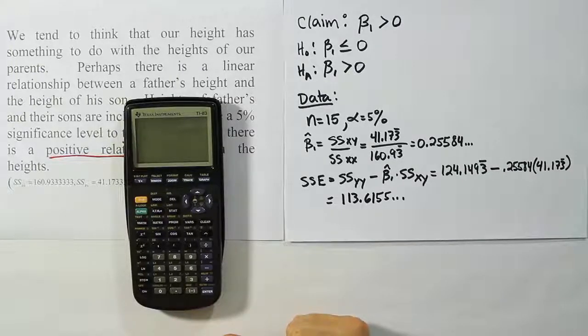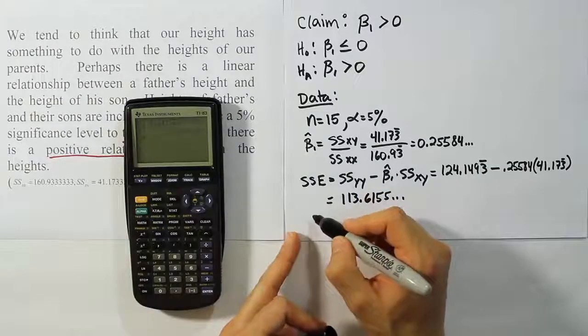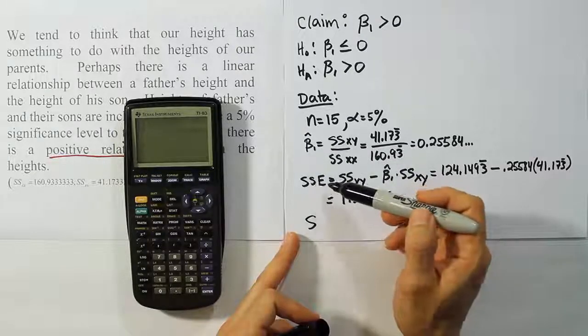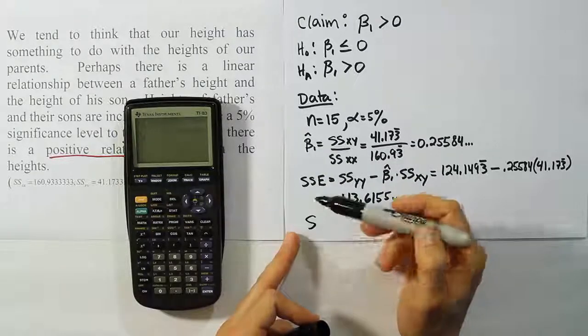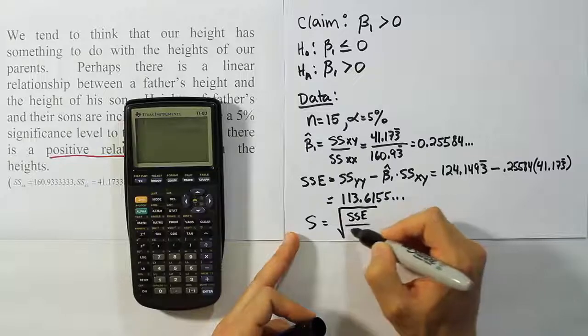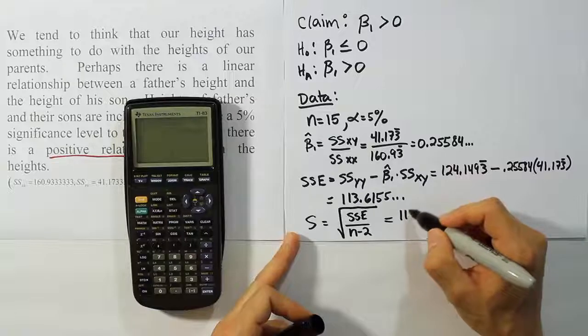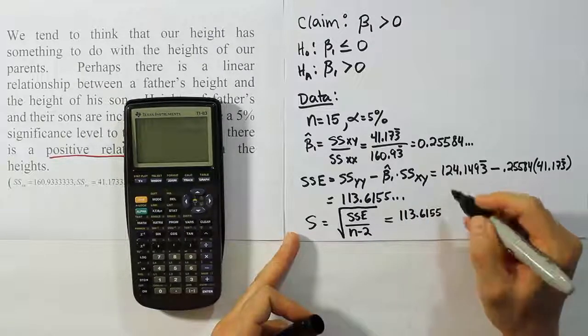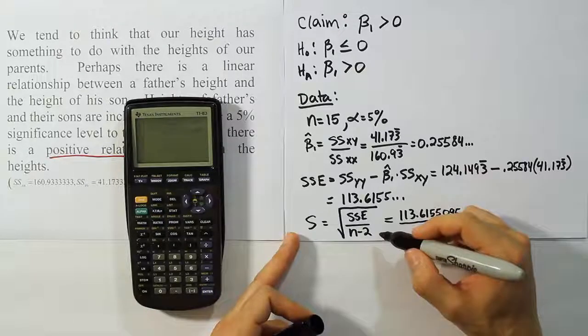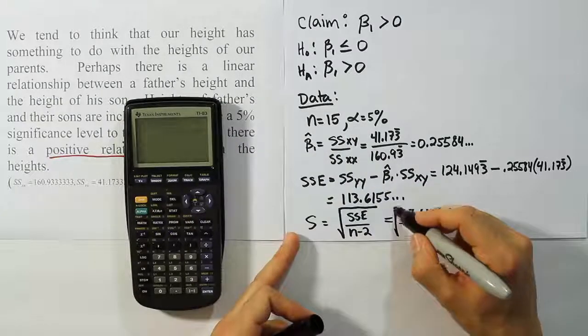Alright, now once you have that value, the sum of square for error, our very next step is to get S from it. So use SSE to get S. So you can see we're following sort of a step procedure. We get the slope point estimator, we get sum of square for error, from that we're going to get S. And S is the square root of SSE over N minus 2. Now SSE we already worked out, that's 113.6155095, if you want to give it more decimal places, divided by N minus 2. Now N we said was 15, take away 2 we have 13, and then take the square root of that.